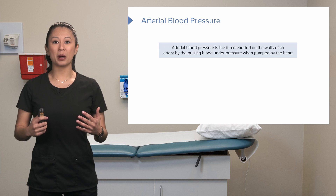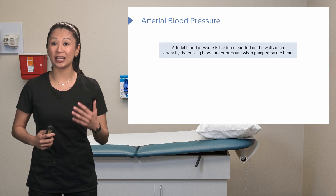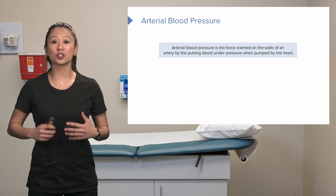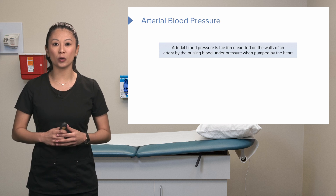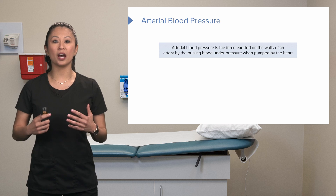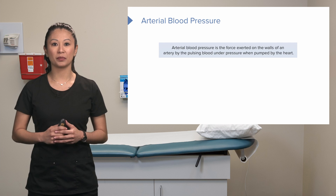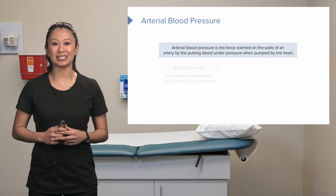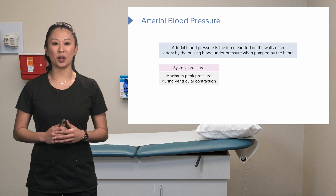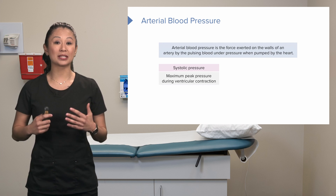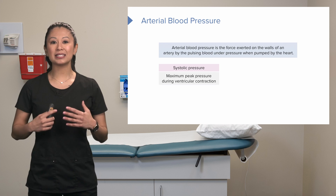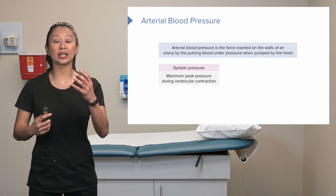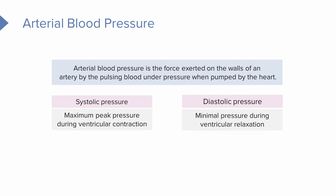When we're talking about blood pressure, we're talking about arterial blood pressure — the force that's exerted on the walls of the arteries by pulsing blood under pressure from the heart. There are two different pieces: systolic, which is the pressure during ventricular contraction, and diastolic, which is the pressure during ventricular relaxation.